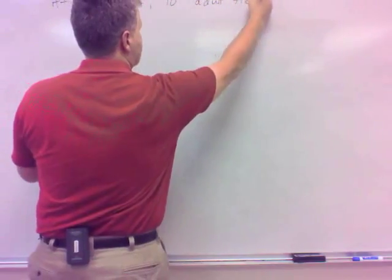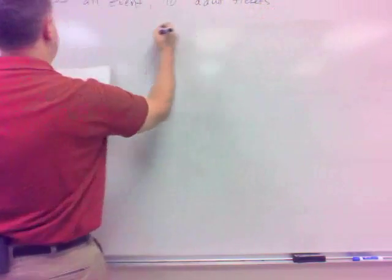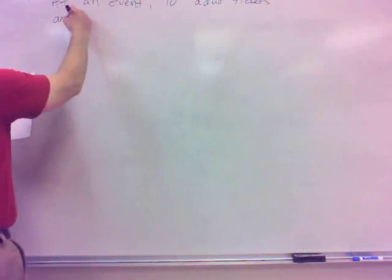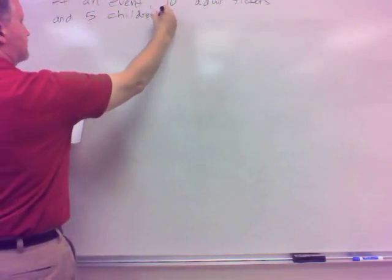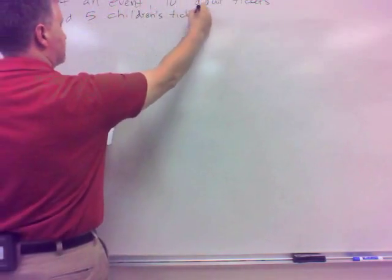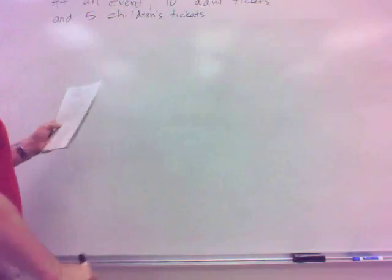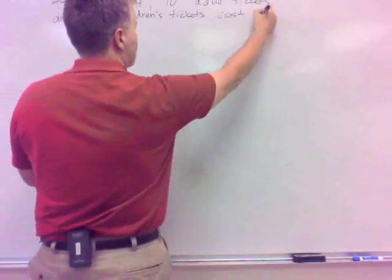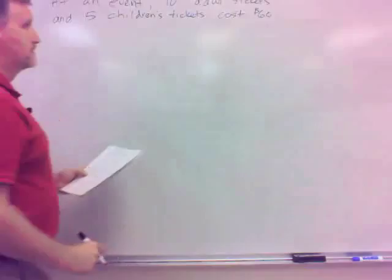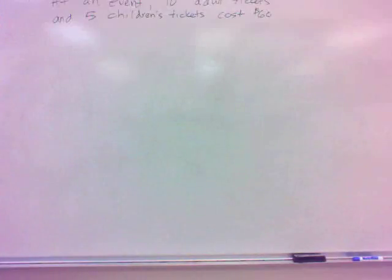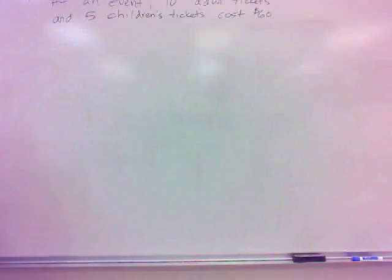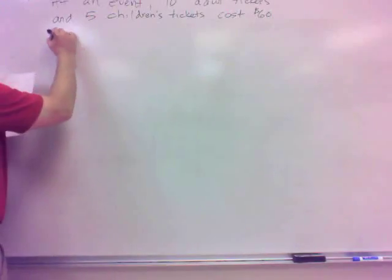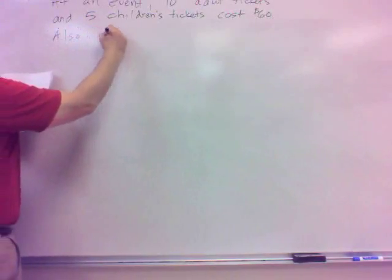It was ten adult tickets and five children's tickets, and that was going to cost $60 altogether. About ten adult and five children, and we know that's $60.